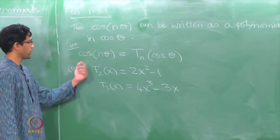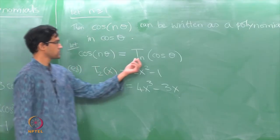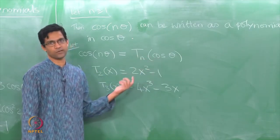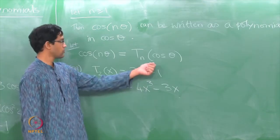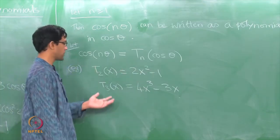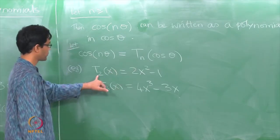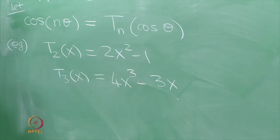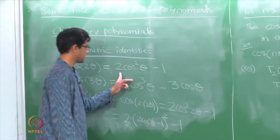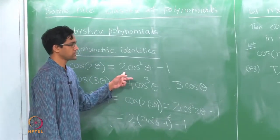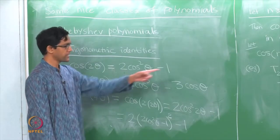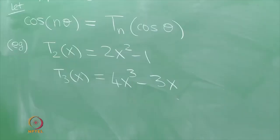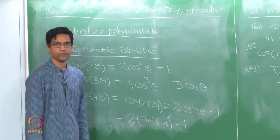What we mean is: cosine of n theta can be written as some polynomial called T_n evaluated at cos theta. So T_n of x is some polynomial — in place of x you plug in cos theta and what you get is exactly the value of cosine n theta. For example, if n equals 2, consider the polynomial T_2(x) = 2x squared minus 1. If you plug in x equals cos theta, you get 2 cos squared theta minus 1 which is exactly cosine of 2 theta. Similarly, 4x cubed minus 3x — plug in x equals cos theta — gives 4 cos cubed minus 3 cos theta, which is exactly cosine of 3 theta.